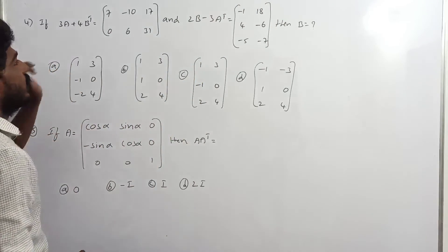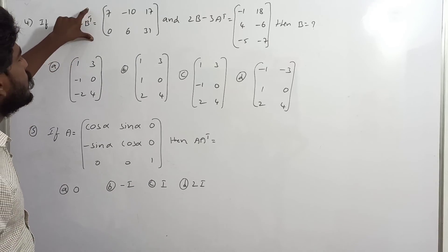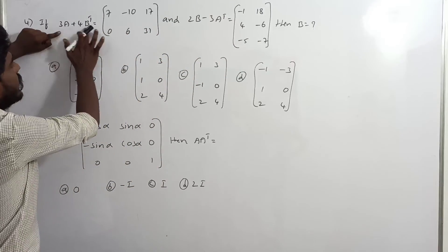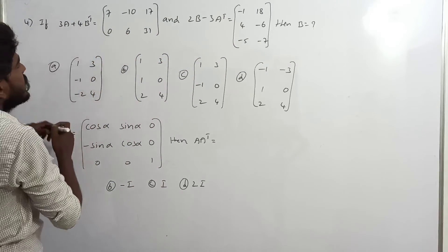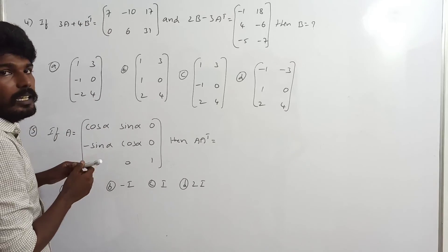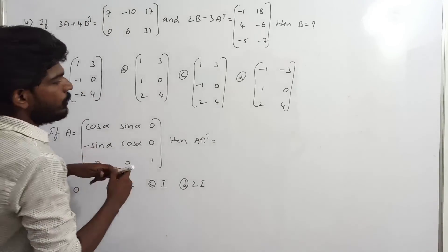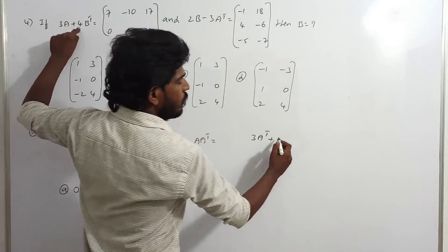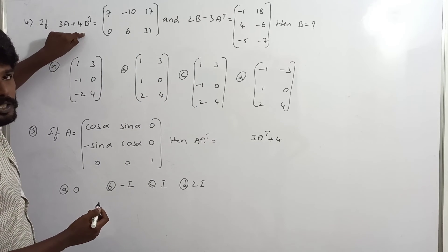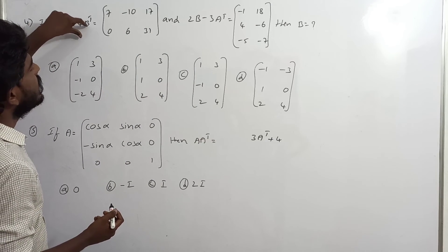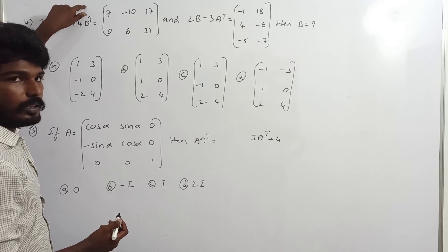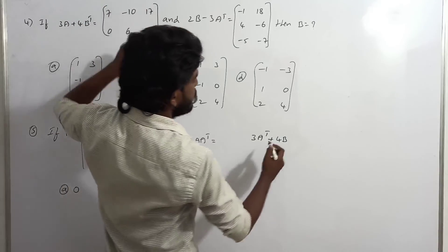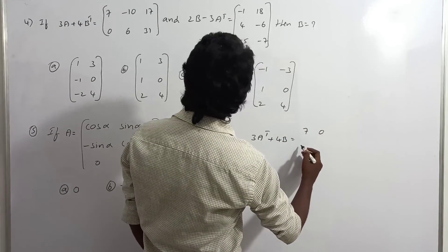To find B, apply transpose on both sides. 3A transpose minus 4B transpose transpose equals 2B minus 3A transpose transpose. Using the property that B transpose whole transpose equals B, and A transpose transpose equals A, we simplify. 3A transpose minus 4B equals 2B minus 3A.